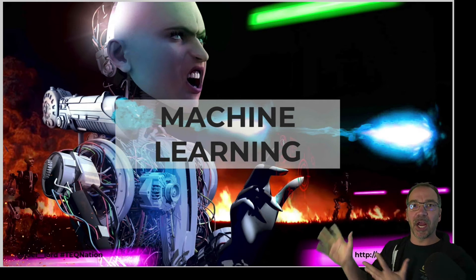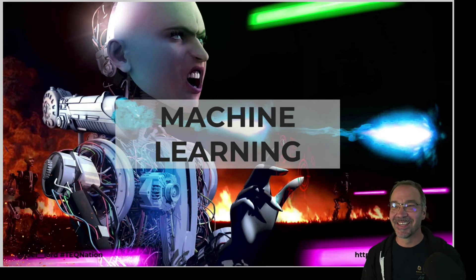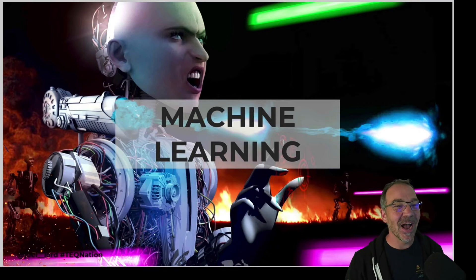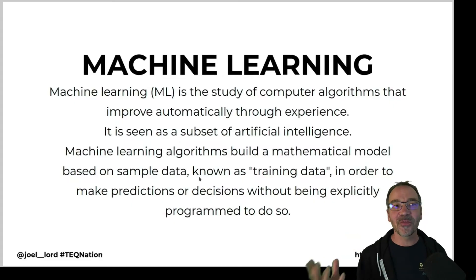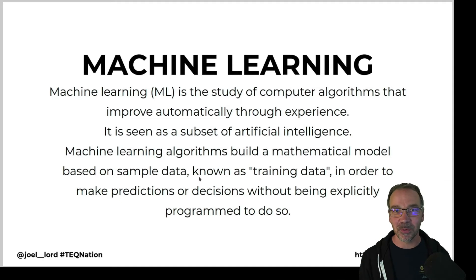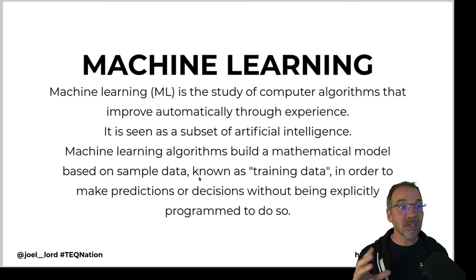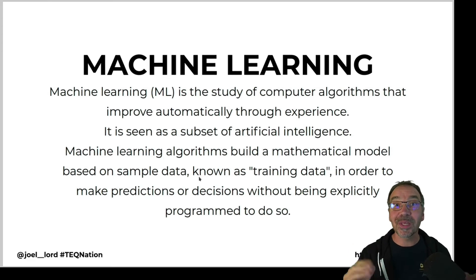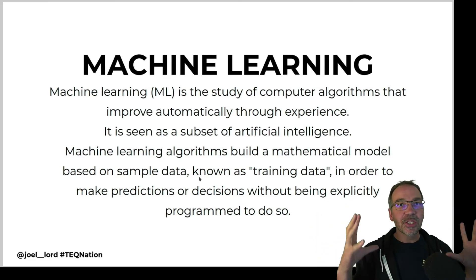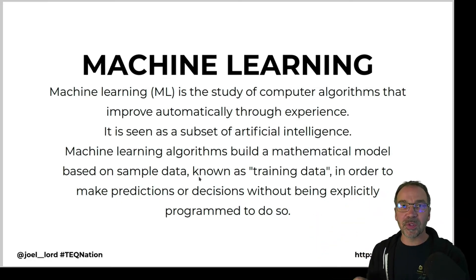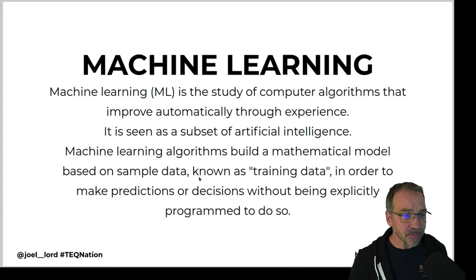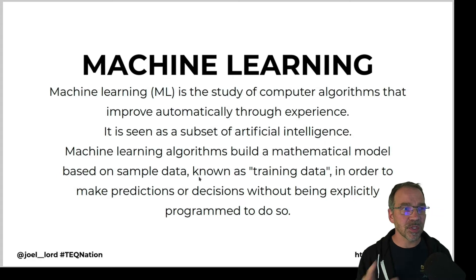To help with all of that, I used machine learning. Machine learning is a study of computer algorithms that improve automatically through experience. It is seen as a subset of artificial intelligence — it builds a mathematical model based on sample data, known as training data, in order to make predictions without being explicitly programmed to do so. Basically, you take data, transform it into numbers, and get something useful out of it. I wanted to use that to do face recognition.